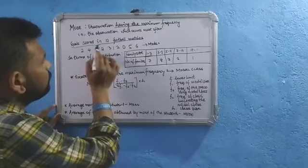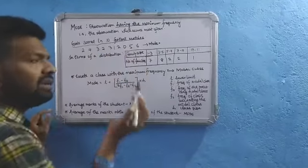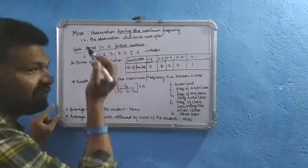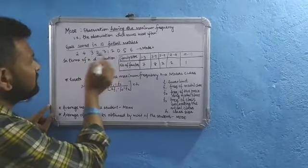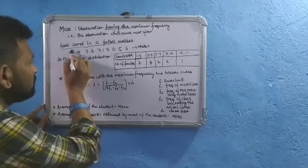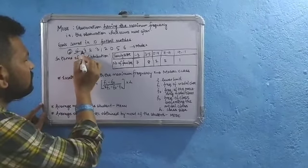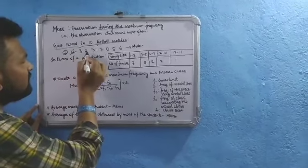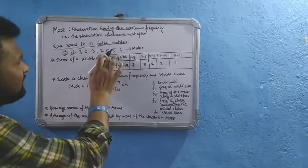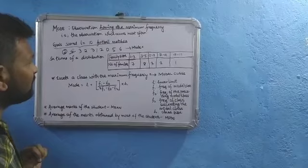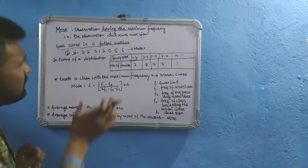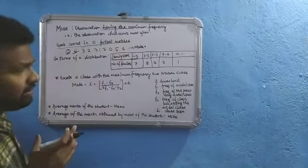Suppose we have taken the example of goals scored in 10 football matches. Suppose Cristiano Ronaldo or Lionel Messi scores goals in 10 football matches: in the first match he scores 2 goals, second 4, third 3, then 2, 3, 1, 2, 0, 5, 6. In the eighth match he didn't score any goal unfortunately.